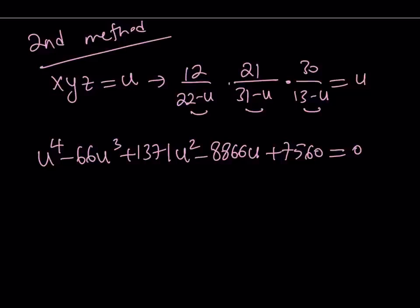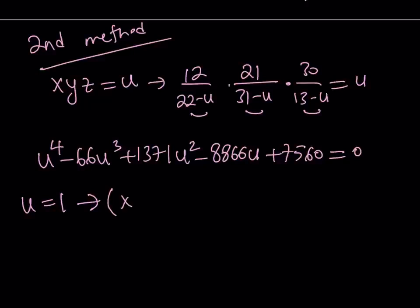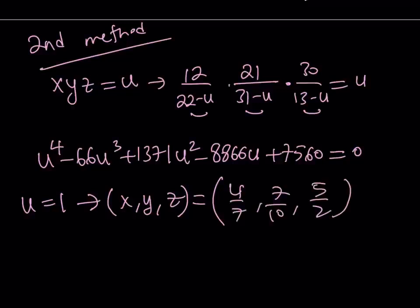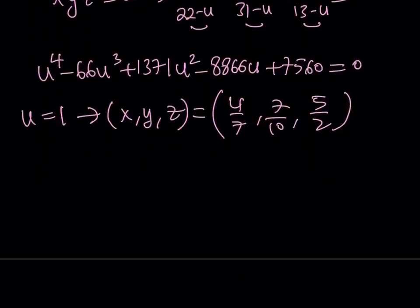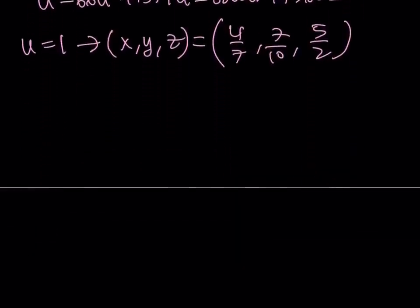So, one of the things that, I know it's kind of hard to check, but you should always, always check that if u equals 1 is a possible solution. If you just look at the sum of the coefficients, you're going to notice that it's 0. And, from here, we get that u is equal to 1. Because, remember, if the sum of the coefficients is 0 in a polynomial, then x equals 1 or u equals 1 is going to be a solution. And, if u is equal to 1, we're going to be getting the solution x, y, z, which is 4 sevenths, 7 tenths, and 5 halves.